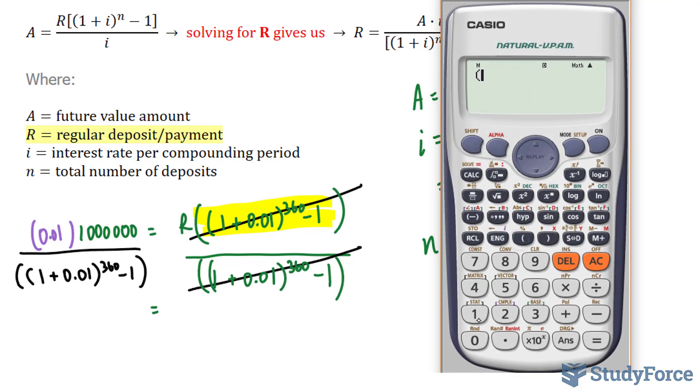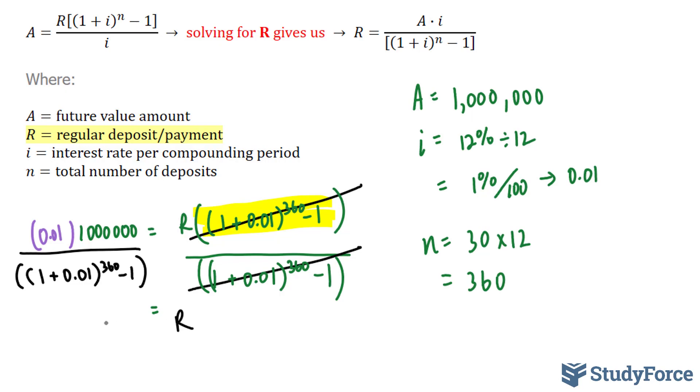So let's use our calculator. 0.01 times 1 million divided by this expression, (1 + 0.01) to the power of 360 minus 1, gives us 286.12. R is equal to 286.12.